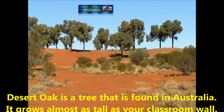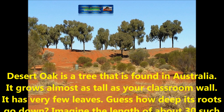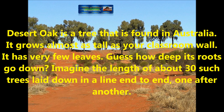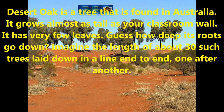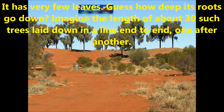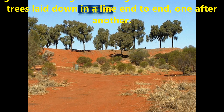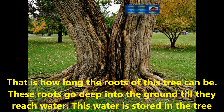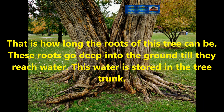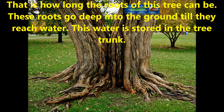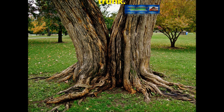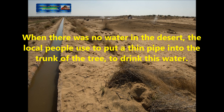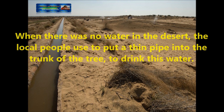Let us see some of the plants in the desert. Desert oak is a tree that is found in Australia. It grows almost as tall as your classroom wall. It has very few leaves. Guess how deep its roots go down. The roots go down as deep as 30 such trees laid end to end in a line. That is how long the roots of this tree can be. These roots go deep into the ground until they reach water. This water is stored in the trunk of the tree. Children, when there was no water in the desert, the local people used to put a thin pipe into the trunk of the tree to drink this water.